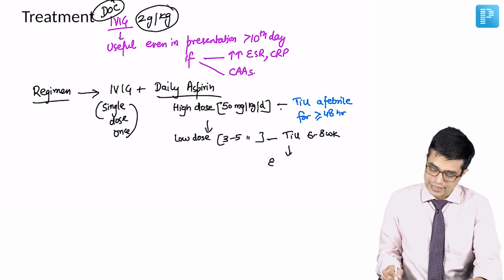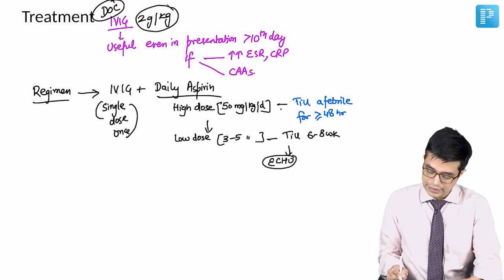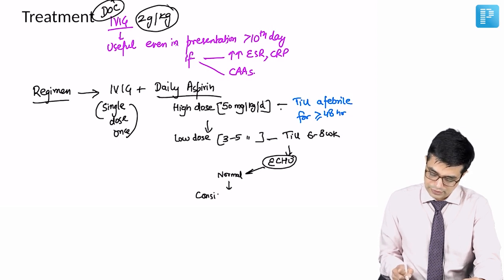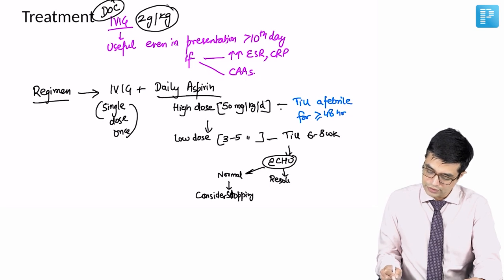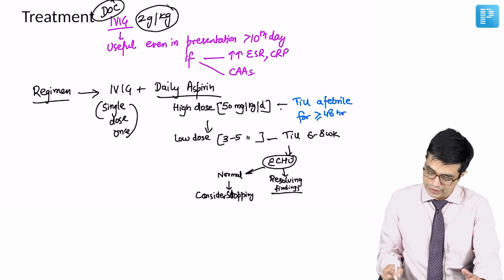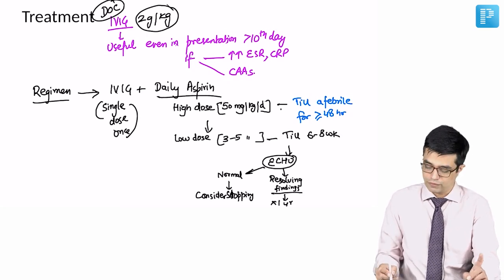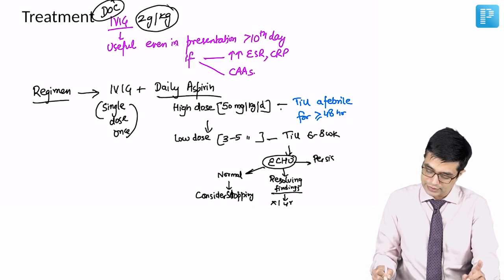At 6 to 8 weeks, as I said before, you will perform an echocardiography. If echocardiography is normal, you will consider stopping aspirin. If echocardiography shows resolving findings, like initially there was aneurysm present, now aneurysm size is decreased, complications are going away, then you will continue aspirin for 1 year. Low dose aspirin will be continued for 1 year. And if there are persistent abnormalities, then you will continue giving aspirin.